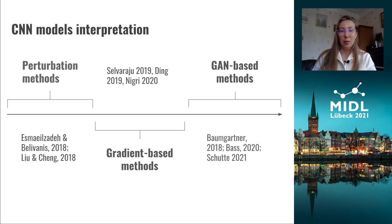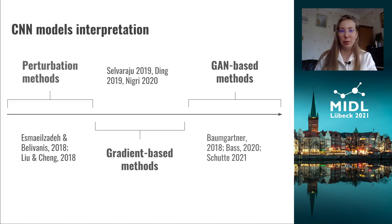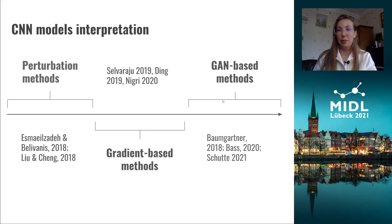Model attraction is basically the visualization of the most relevant image parts for the model. There are three main methods for that: perturbation-based ones, gradient-based ones, and GAN-based methods.